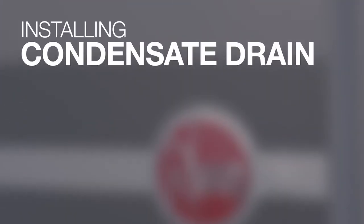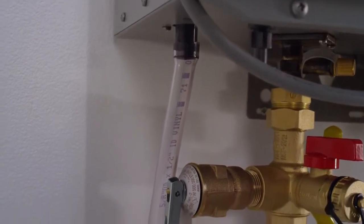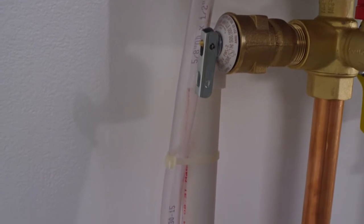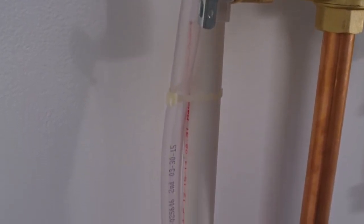Install condensate drain. Remove the factory shipping cap from the drain connection. Slide a one-half inch diameter drain hose over the fitting at the bottom of the water heater and secure with a hose clamp. Run the drain line to a suitable drain. Do not create a trap in the hose. Run straight to drain.